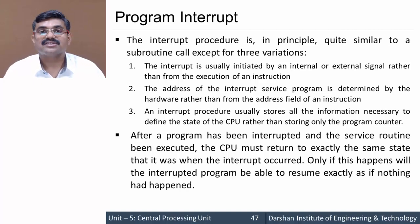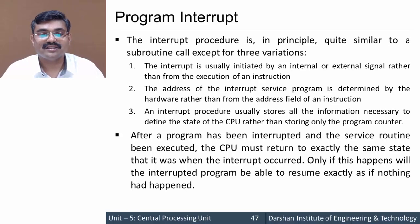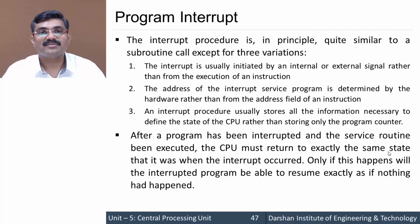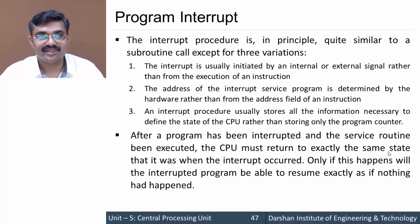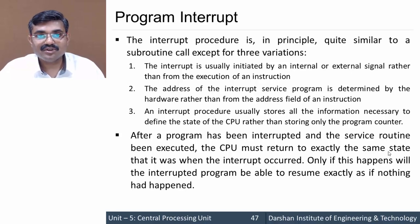When an interrupt occurs, the main program stops execution and jumps to the Interrupt Service Routine (ISR). Once the ISR has been executed, it must return to the main program exactly where it stopped. The CPU must return to exactly the same state it was in when the interrupt occurred — it should not restart from the beginning. The main program execution is paused, the ISR executes (which may be an I/O program or similar), and once completed, execution returns to exactly the same point where the interrupt occurred.